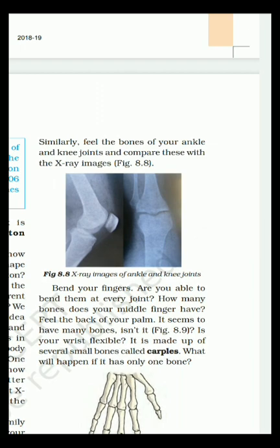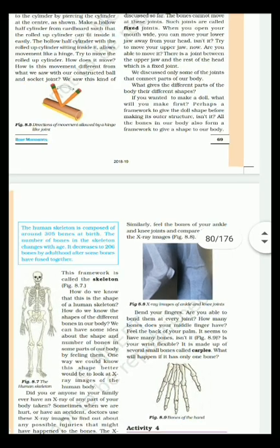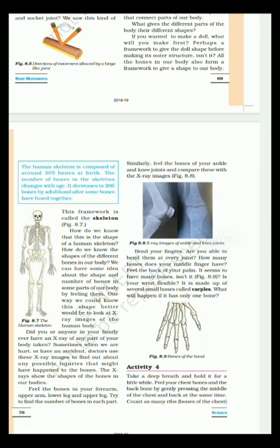And this is the X-ray images of ankle and knee joints. Bend your fingers. Are we able to bend them at every joint? How many bones does your middle finger have? Feel the back of your palm. It seems to have many bones, isn't it? Is your wrist flexible? It is made up of several small bones called carpals. But it is stiff and flexible. It means that it is made up of small bones, our carpals.